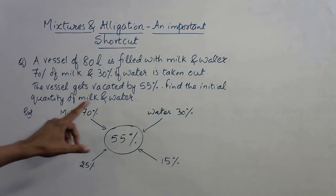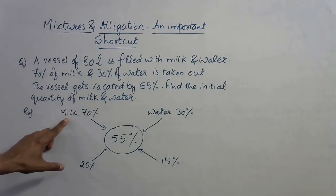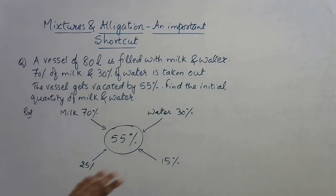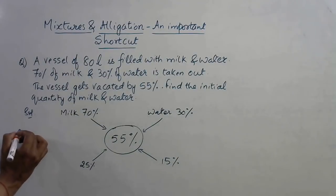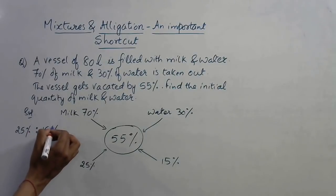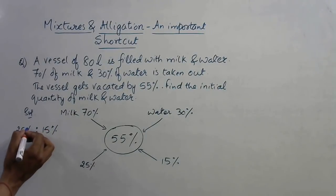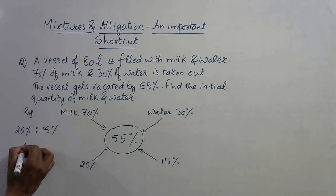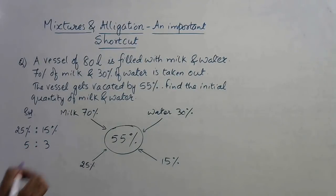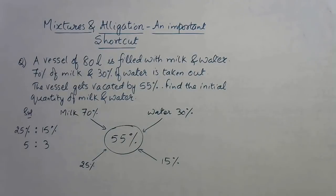Surprisingly, the initial quantity of milk and water—I have written milk this side, so 25% and 15%—the ratio of these two percentages will give you the ratio of initial quantity of milk and water in the mixture. So 25% and 15%, the ratio is 25:15, that is 5:3. This is the initial quantity of milk and water, that is the ratio.